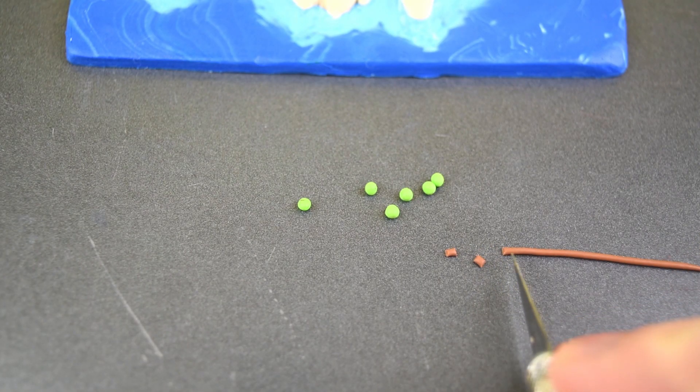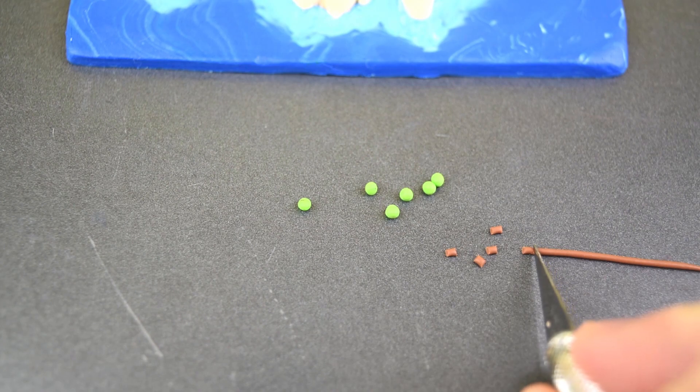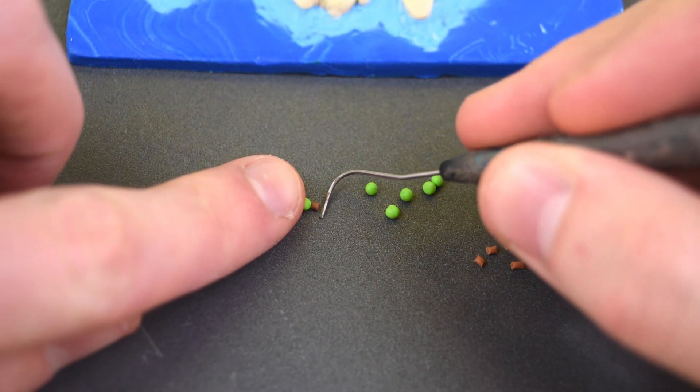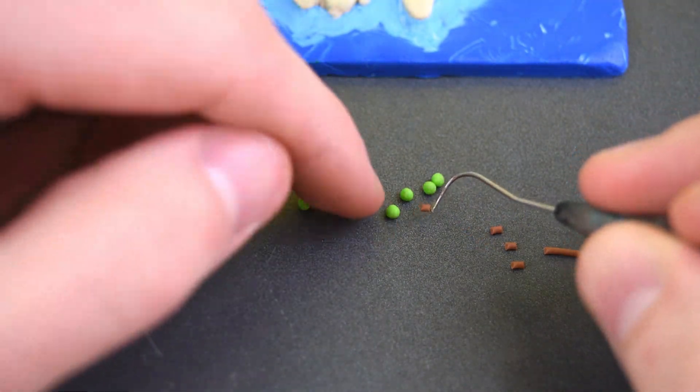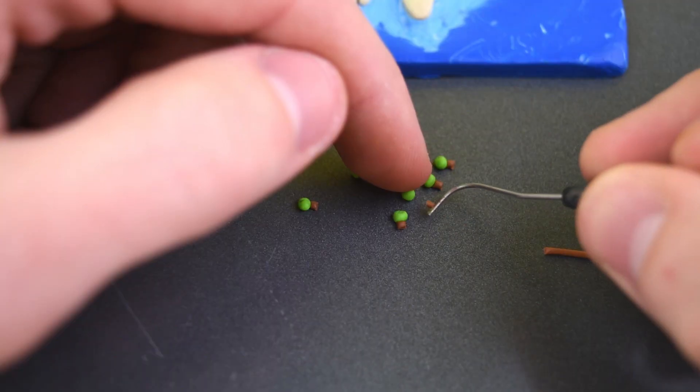Moving on, we have some tiny, tiny trees. We need to attach the tree trunks onto them, and we have a bigger version of this that we'll create after we place these onto the map.